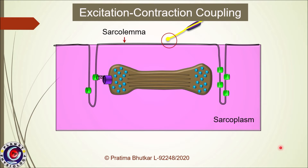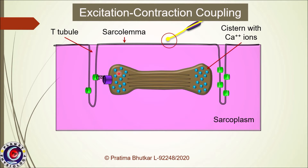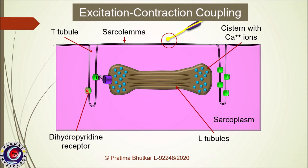Shown in this diagram are deep invaginations of sarcolemma to form T-tubules. Cisterns of sarcoplasmic reticulum store calcium ions. There are dihydropyridine receptors in T-tubules which are voltage-gated calcium channels. In the case of skeletal muscles, these channels are mechanically or physically associated with another receptor in the cisternae called ryanodine receptors. This circle represents the neuromuscular junction.